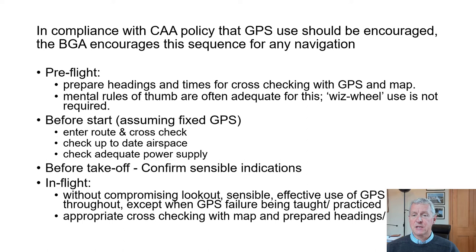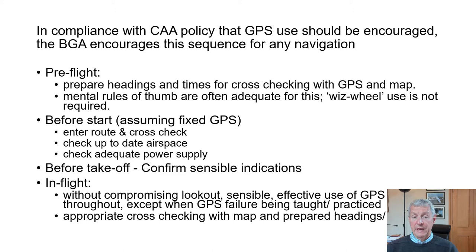Before flight we make some preparation of the headings and the times for legs, which we can cross-check against the GPS and the map — mental rules of thumb are quite adequate for that, we don't have to use the whiz wheel or circular slide rule. Before we start a TMG, assuming we've got a fixed GPS in it, we put the route into the GPS and cross-check it with the map. We make sure we've got up-to-date airspace and an adequate power supply for the GPS.